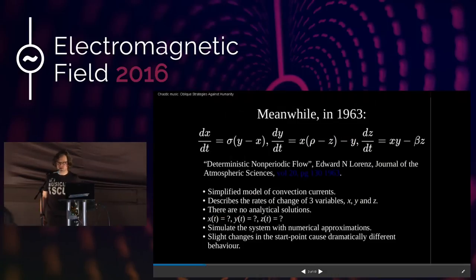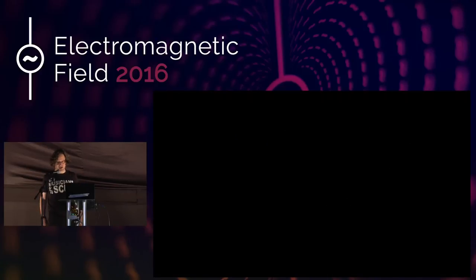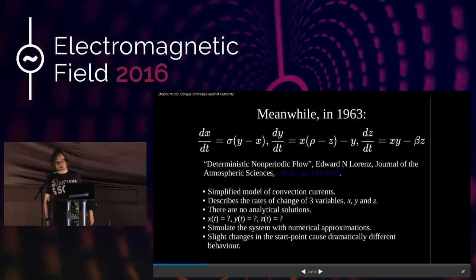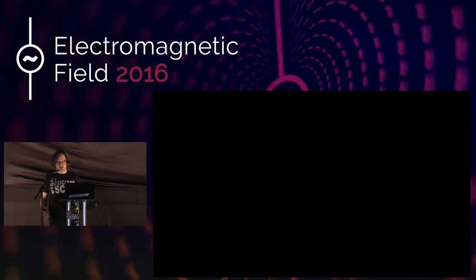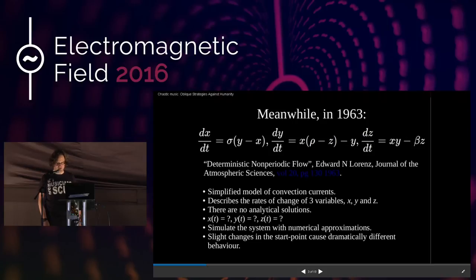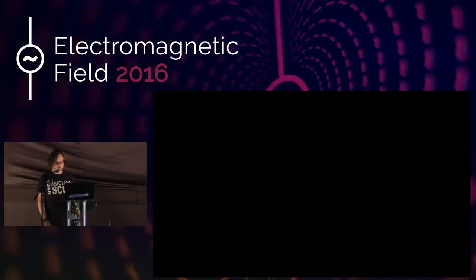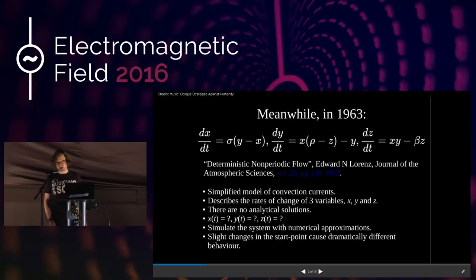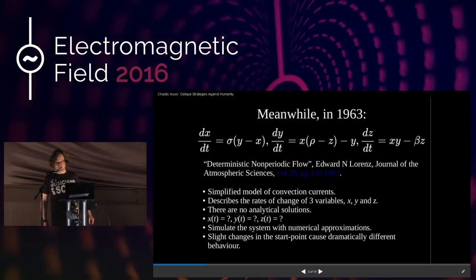It's 1963, and one Edward Lorenz is playing with a simplified model of convection currents. We have three variables — x, y, and z — and the maths at the top just says how the rates of change of those quantities depend on each other. There are some parameters. Beta is the one that's interesting because it describes how chaotic the system is. There are no analytical solutions — if you wanted an equation saying how x varies with time, you can't have one.